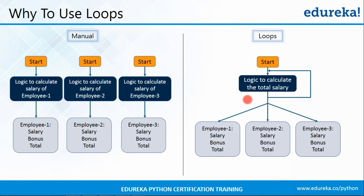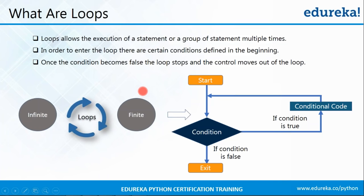Let us move forward and see what exactly are loops. Loops basically allow us to execute a statement or a group of statements multiple times. The control comes and checks a condition — if the condition is true, it executes the conditional code inside the loop. After executing, it goes back and checks the condition again. If still true, it executes again, and keeps repeating until the condition becomes false.